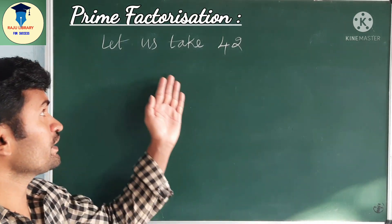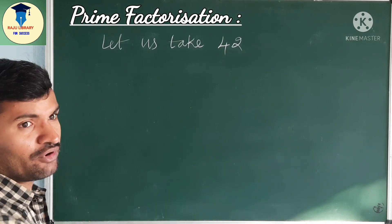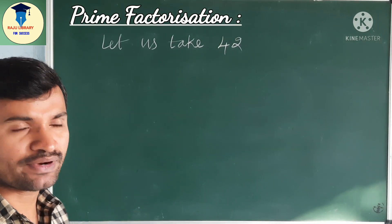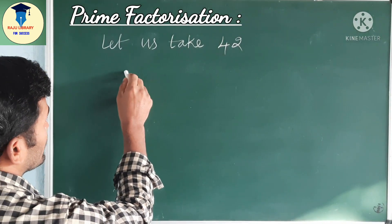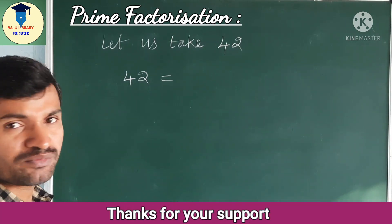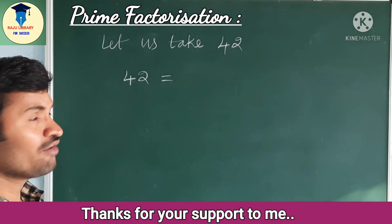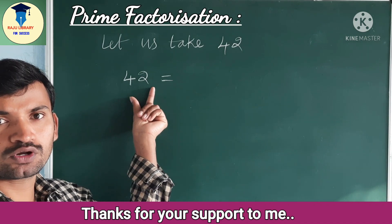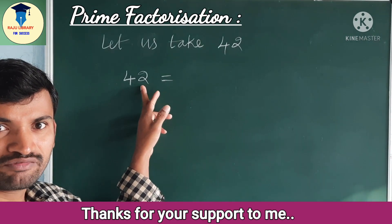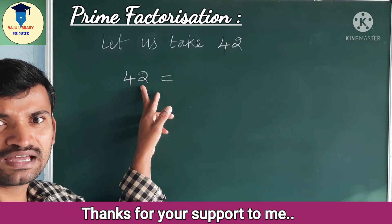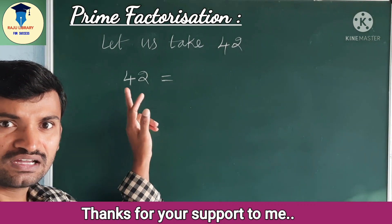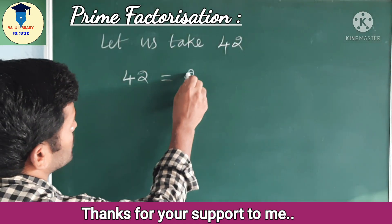Okay dear students. Now let us take one more example, that is 42. How can we write 42 as a product of primes? Start with the least prime number — the smallest prime number, which is 2. We have to observe: is 42 divisible by 2? Here the ones place is 2. Because for divisibility by 2, the number must have ones place 0, 2, 4, 6, or 8. So 42 is divisible by 2, and we can take the smallest prime number 2.